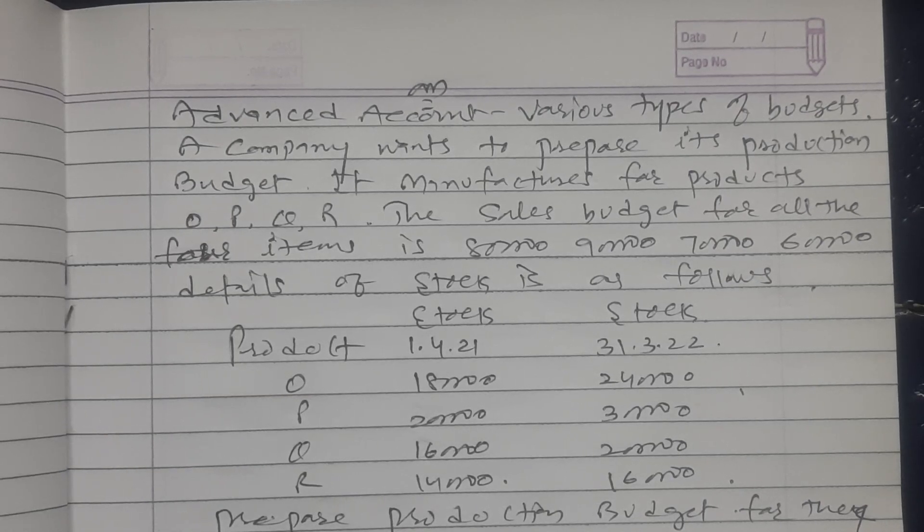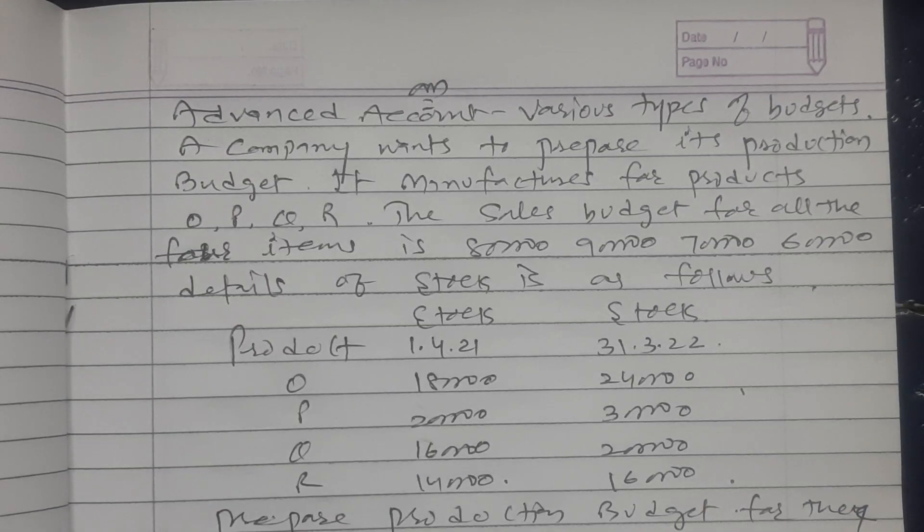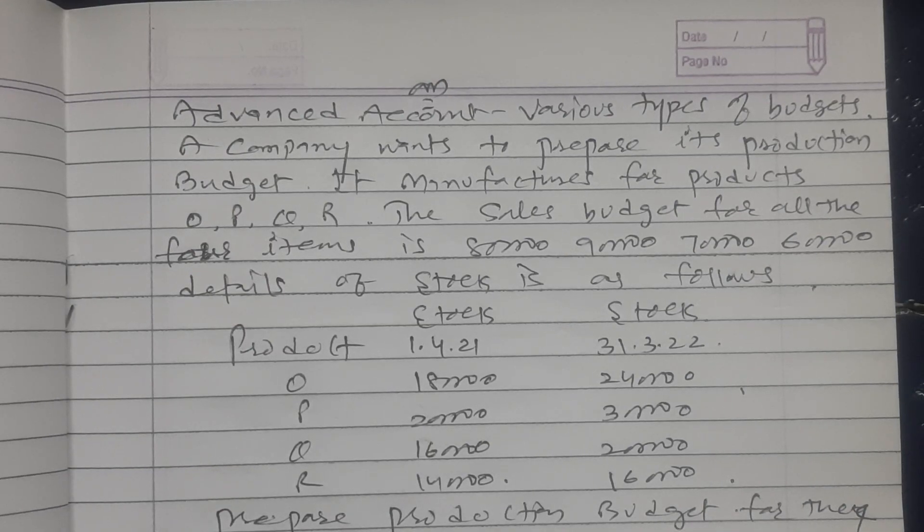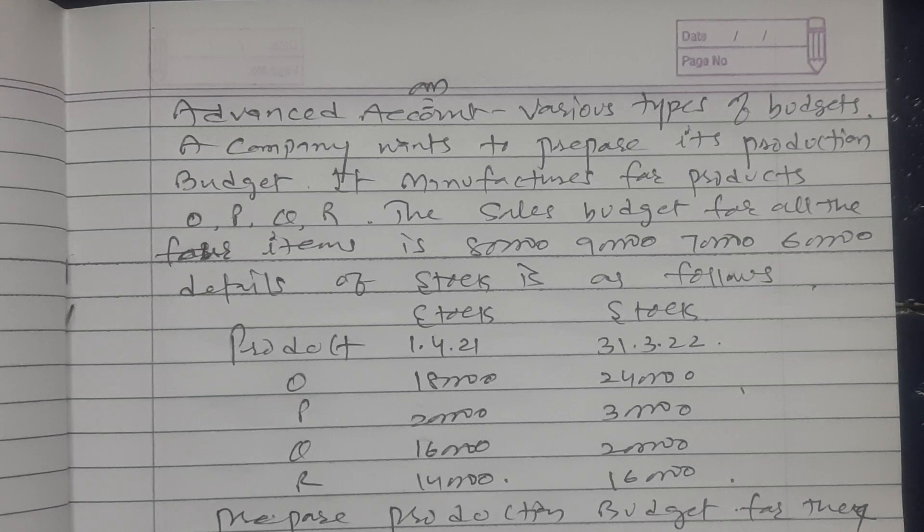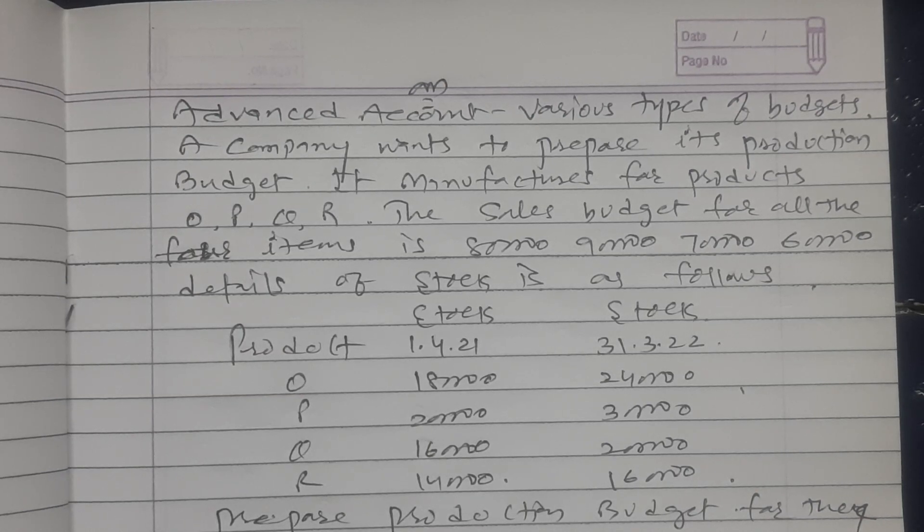The sales budget for all four items is 8 lakh, 9 lakh, 7 lakh, and 6 lakh. Details of the stock is as follows: value of opening stock is given for O, P, Q, R, and similarly value of closing stock is given.